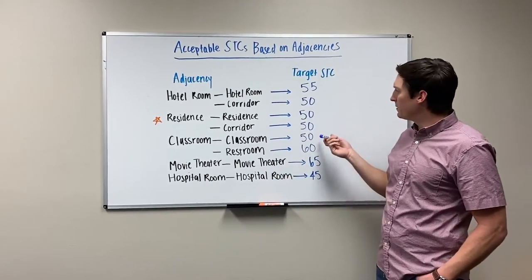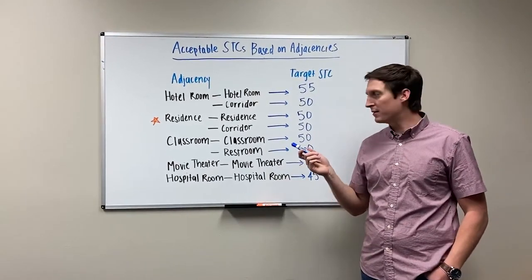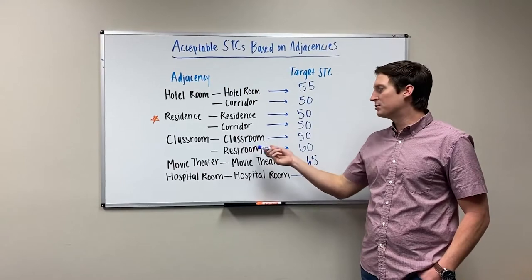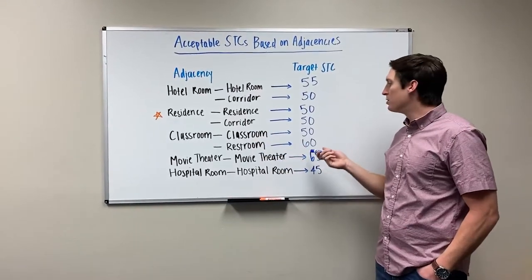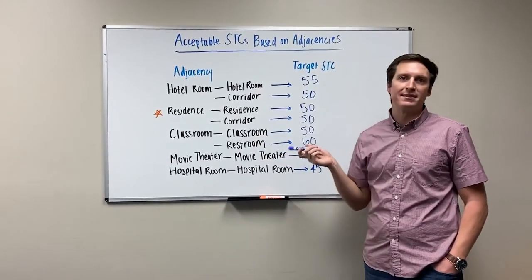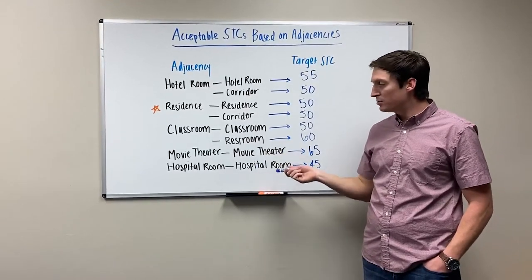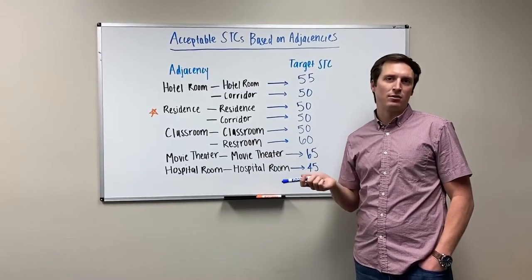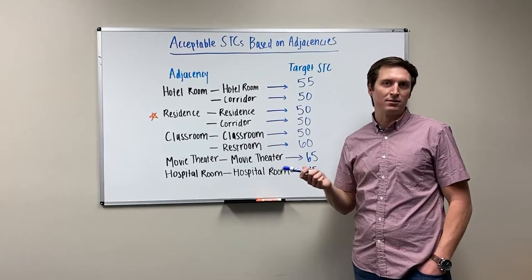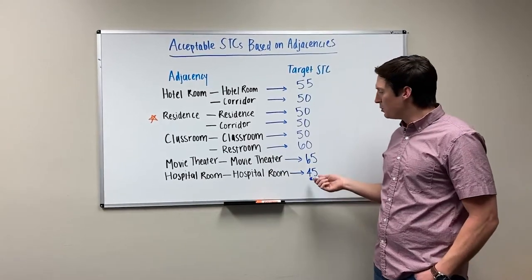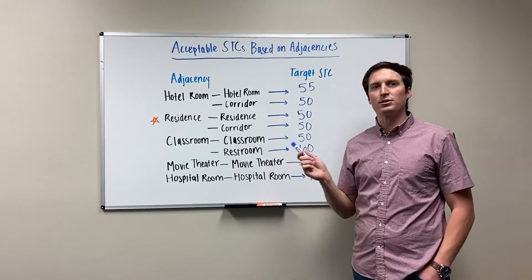Classrooms are generally driven by ANSI S12 or LEED version 4. Classroom to classroom, you want to hit a 50 or higher, whereas classroom to restroom or classroom to mechanical space you definitely want to be 60 or higher. For hospital rooms, the guideline is called FGI — Facility Guidelines Institute — and you want to be a 45 or higher.